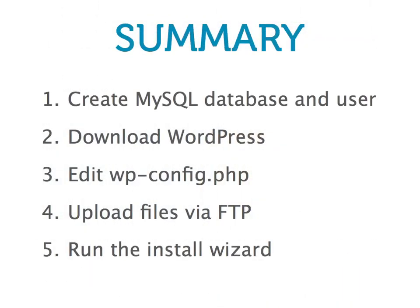Let's do a quick review. To install WordPress via FTP, we first need to create a MySQL database and user through the control panel. Next, we download the latest version of WordPress from WordPress.org. We then edit the wp-config.php file to enter the database details from the previous step. Then we upload those files to our web server using FTP. And lastly, we complete the installation by running the installation script.